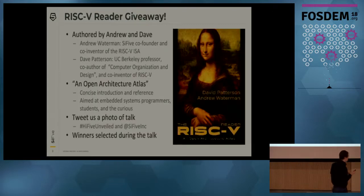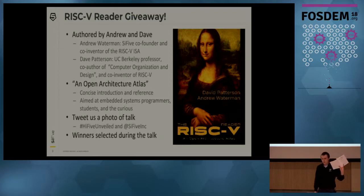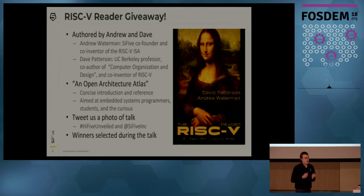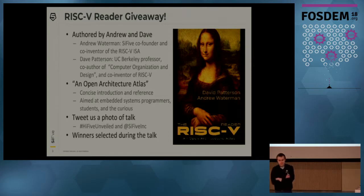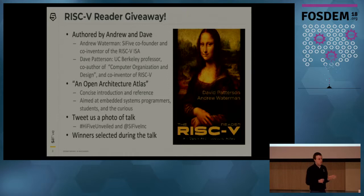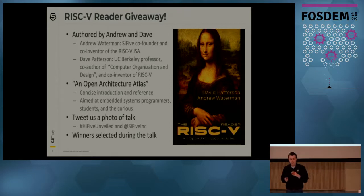For those of you less familiar with the RISC-V ISA, we've written a book and we're giving away signed copies. The book was written by Andrew Waterman and Dave Patterson, a professor at UC Berkeley. It's titled 'An Open Architecture Atlas' and is designed as an introduction to the RISC-V ISA for students, hobbyists, and anyone interested in computers. Tweet a photo of the talk with hashtag #HiFiveUnveiled and @SiFiveInc to win one of our ten books.